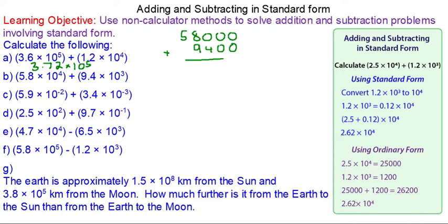Using the column method, we simply add them together. We get 67,400 or 6.74 × 10⁴.